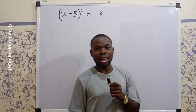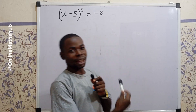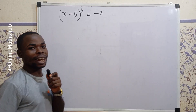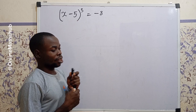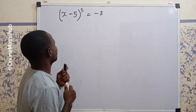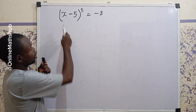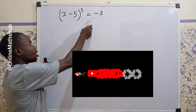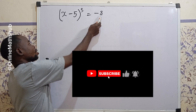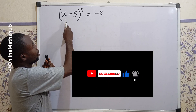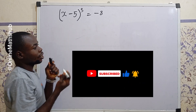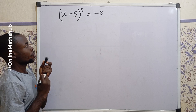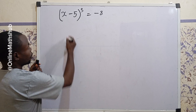Hello friends, welcome back to Online Master. We are going to be solving this question right here on the board. We have (x minus 5) to the power 3 equals minus 8, and I want to find out the value of x that is going to satisfy this problem.